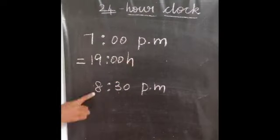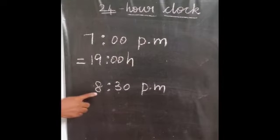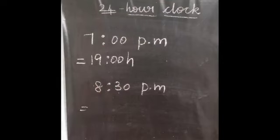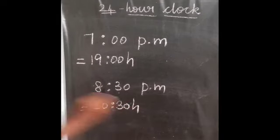Then if the time is 8:30 PM, convert this into 24 hour clock time. You have to add 12 to 8. What is 12 plus 8? Count: 13, 14, 15, 16, 17, 18, 19, 20. So 20:30 - that is 20 hours and 30 minutes.